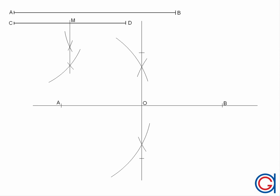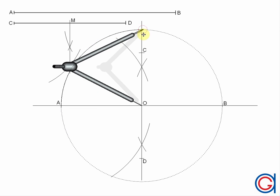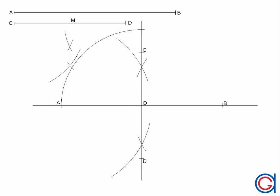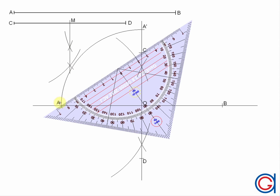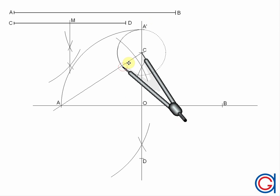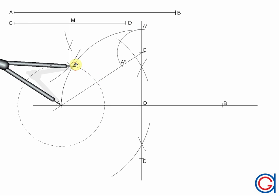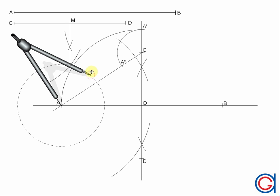Now we have the two axes of our oval located correctly. With our compass centred on zero and radius OA, we scribe an arc to the right until it cuts the vertical bisector — we call this point A1. We then join point A to point C. With our compass centred on point C and radius CA1, we scribe an arc to the left until it cuts the line AC at a point we will call A2.